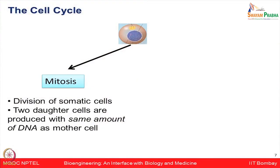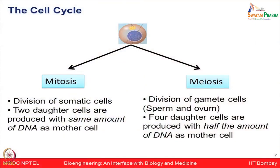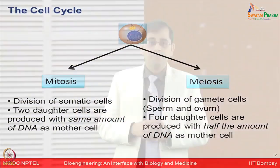In mitosis, the division of somatic cells happens, whereas meiosis governs the division of gametes — especially the sperm and the ova. In mitosis, the two daughter cells produced contain the same amount of DNA as the mother cell. In meiosis, four daughter cells are produced which contain half the amount of DNA as the mother cell.